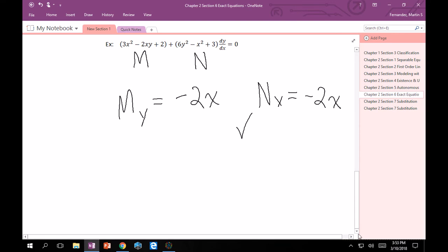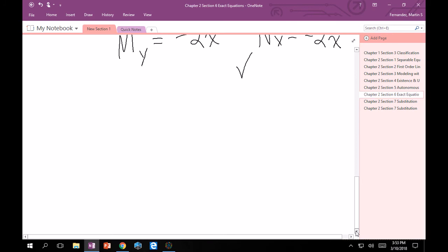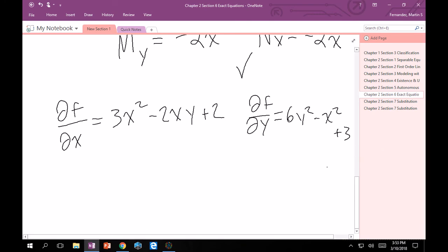And since they are equal, good. We know that this is exact. So, then the next step is to set up our f function, right? So, and the rules were that we set up df dx is equal to m, right? And my m, if you didn't write it down, is just 3x squared minus 2xy. Plus 2, and my df dy is equal to 6y squared minus x squared plus 3.